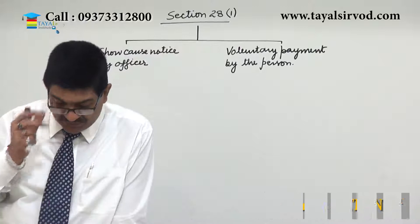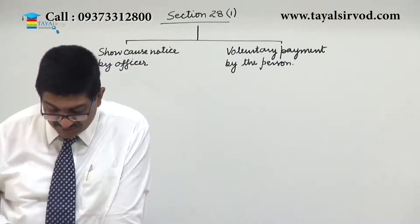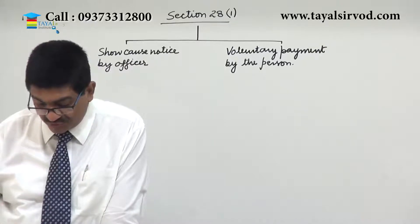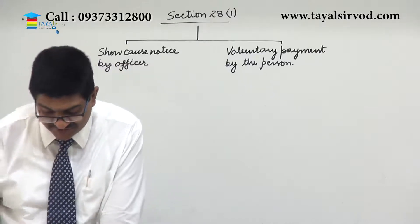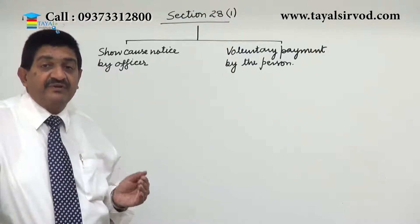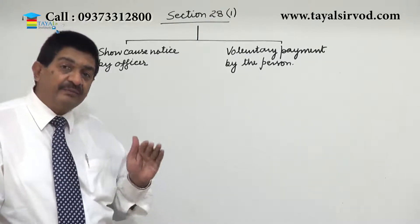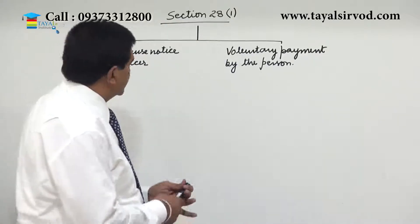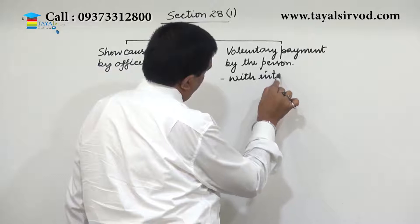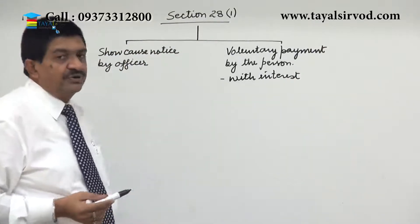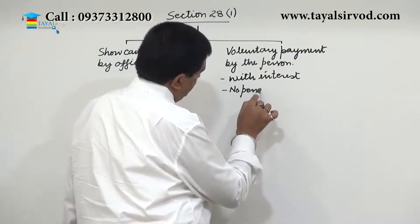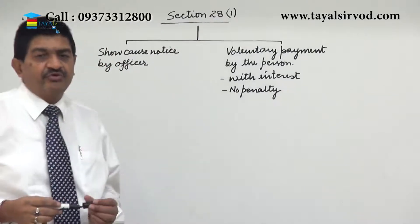You can refer to subsection 10 for this — where an order determining the duty is passed by the proper officer under this section, the person liable to pay shall pay the amount so determined along with interest, whether or not the amount of interest is specified separately. So whenever there is a delay in payment, interest is always there whether it is demanded or not, whether it is in the order or not. So in the case of voluntary payment, if the person makes the payment with interest, then no penalty — only interest will be payable.